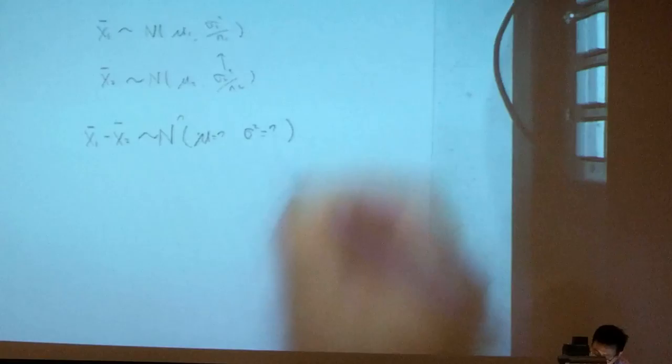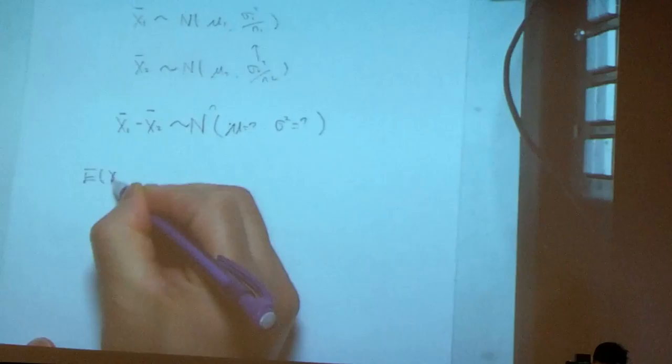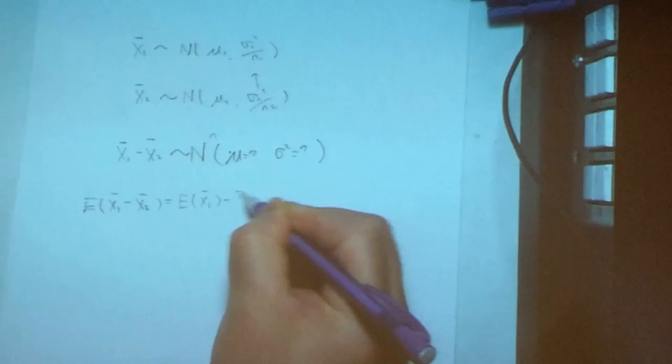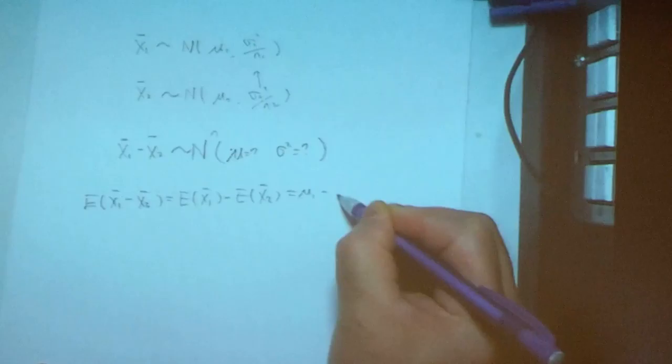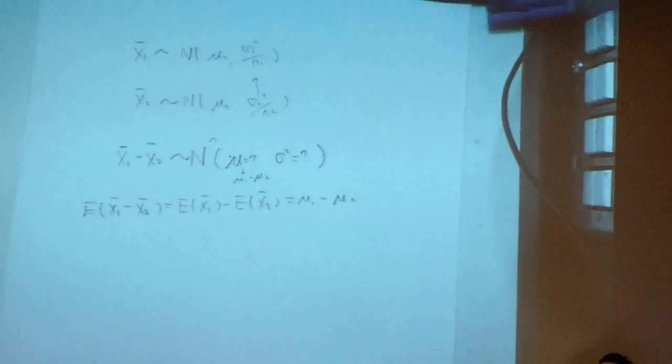And what is the mean? Basically, the mean is what? And what is the variance? So, basically, we need to know that. From here, we know the expected value of X̄₁ minus X̄₂, this expected value of X̄₁ minus the expected value of X̄₂. This one, this guy is μ₁. This one is μ₂. So we now know this guy is μ₁ minus μ₂.